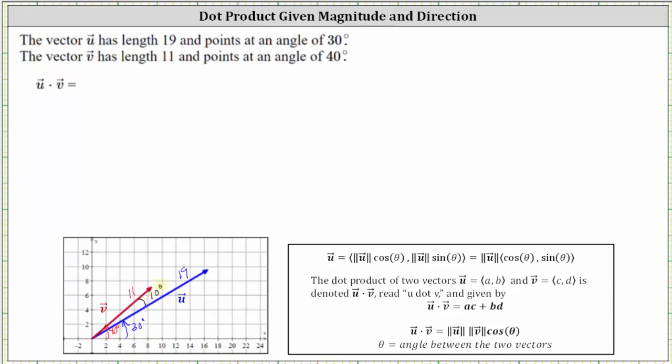There are two ways we can determine the dot product. First, vector u dotted with vector v is equal to the magnitude of vector u times the magnitude of vector v times cosine theta, where theta is the angle between the two vectors. The second method is to find the component form of the two vectors, then determine the sum of the products of the x and y components. We will show both methods.